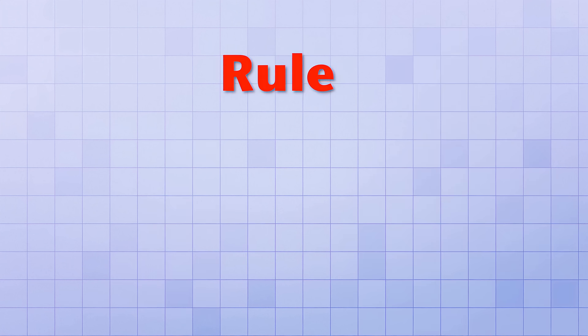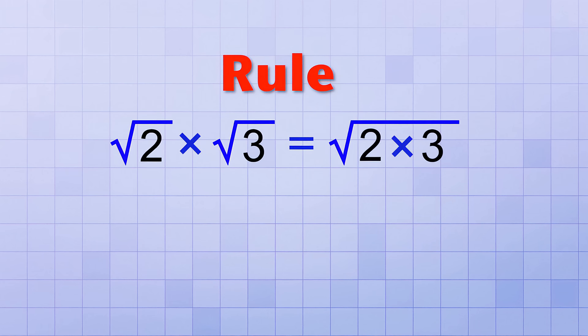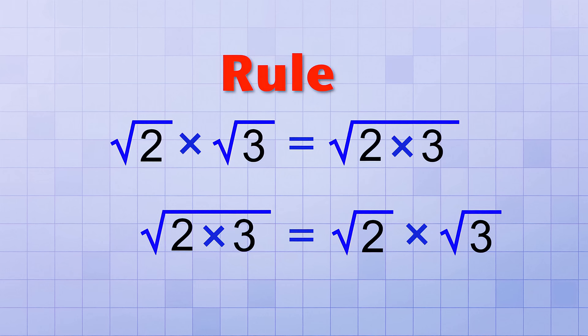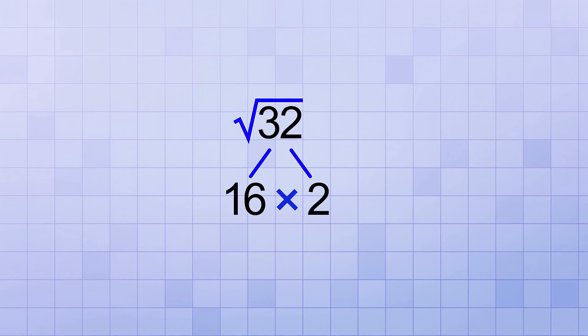That rule says if you have two square roots that are being multiplied together, like the square root of 2 times the square root of 3, you can combine them like this, the square root of 2 times 3. And you can go the other way too and uncombine them. So if you start with the square root of 2 times 3, you could change it to the square root of 2 times the square root of 3.